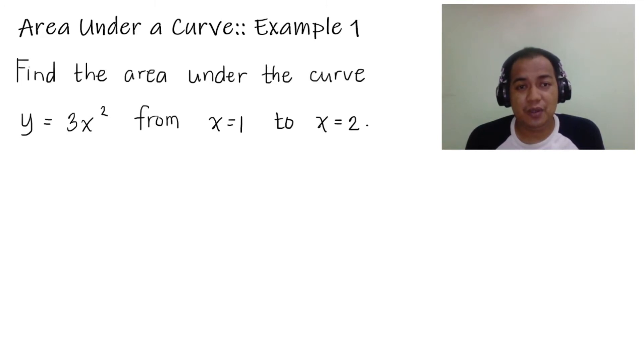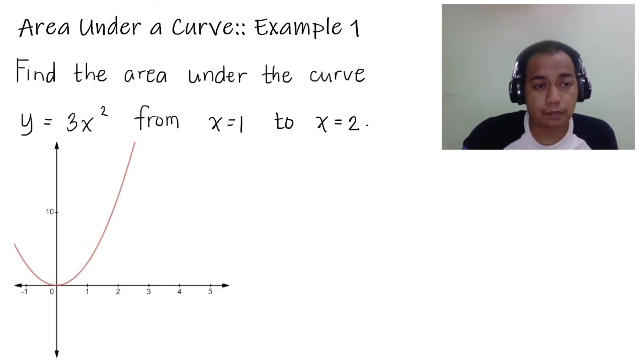For this example, we are given y equals 3x squared. Basically, this is a parabola. Sa parabola, mas steep lang yung slope niya because of the presence of the constant three. The center or the vertex is at 0,0. So let us graph the parabola, and the parabola looks like this.